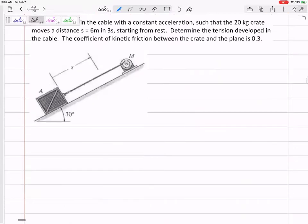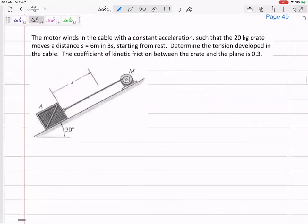So let's do some problems. Y'all know I like to work out some problems. So how about this one: Got a motor that winds this cable with a constant acceleration such that the 20 kilogram crate moves a distance of 6 meters in 3 seconds starting from rest. That first sentence right there sounds like the stuff we had been doing before. Constant acceleration, moves a distance of 6 meters, a time of 3 seconds, starts from rest with an initial velocity of 0.